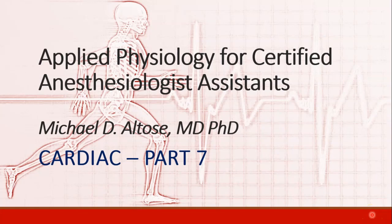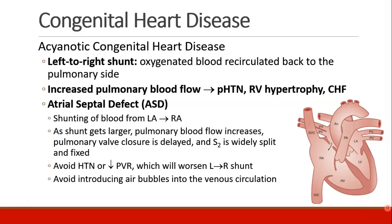Hi, this is Michael Altos. We are continuing our discussion of cardiac physiology, and this is recording part 7. I'd like to review a few of the most common, or at least the most commonly discussed, congenital heart diseases. These are structural diseases that patients are born with, and they can be divided into acyanotic and cyanotic congenital heart diseases.